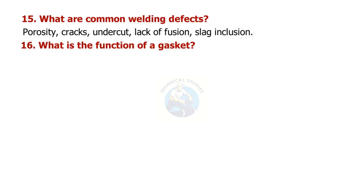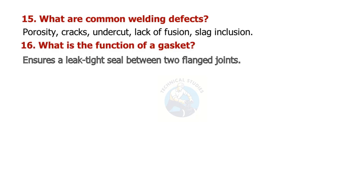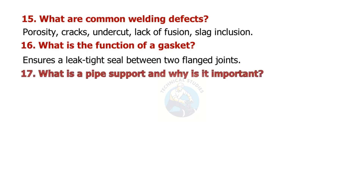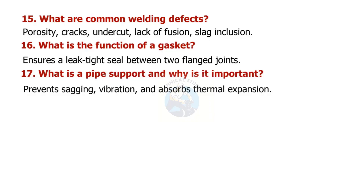What is the function of a gasket? It ensures a leak-tight seal between two flange joints. What is a pipe support and why is it important? It prevents sagging and vibration, and absorbs thermal expansion.